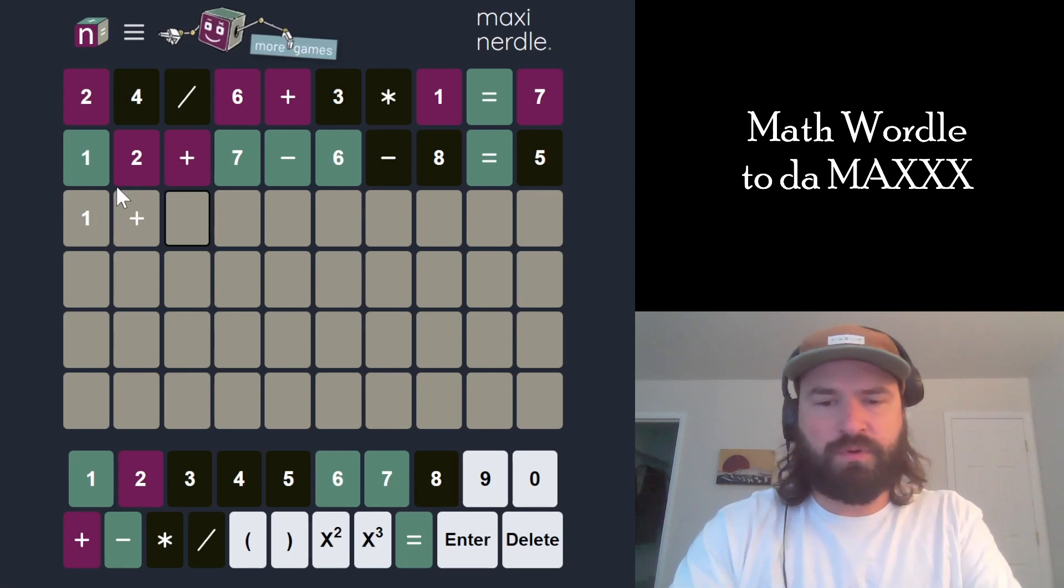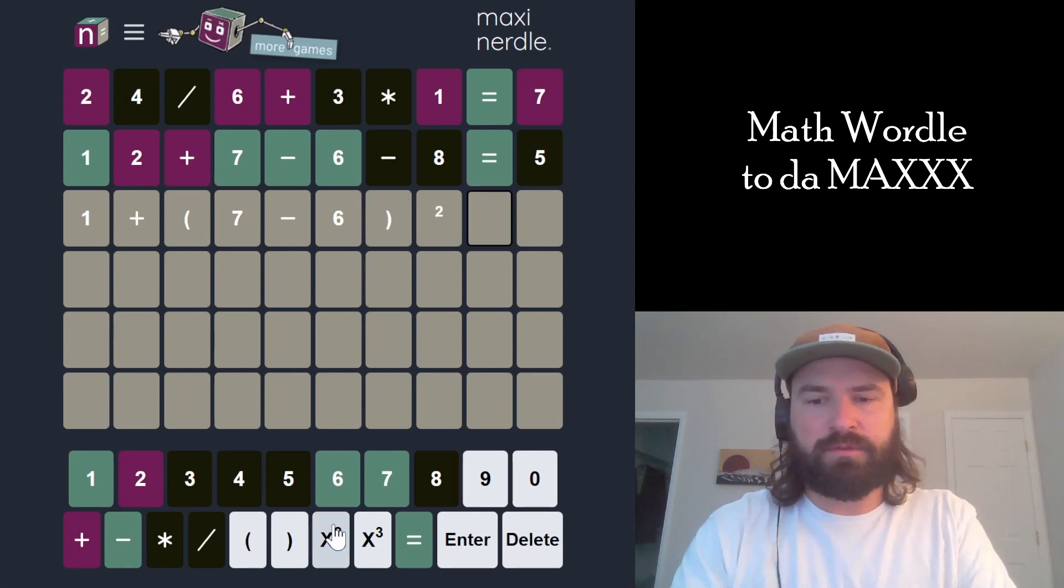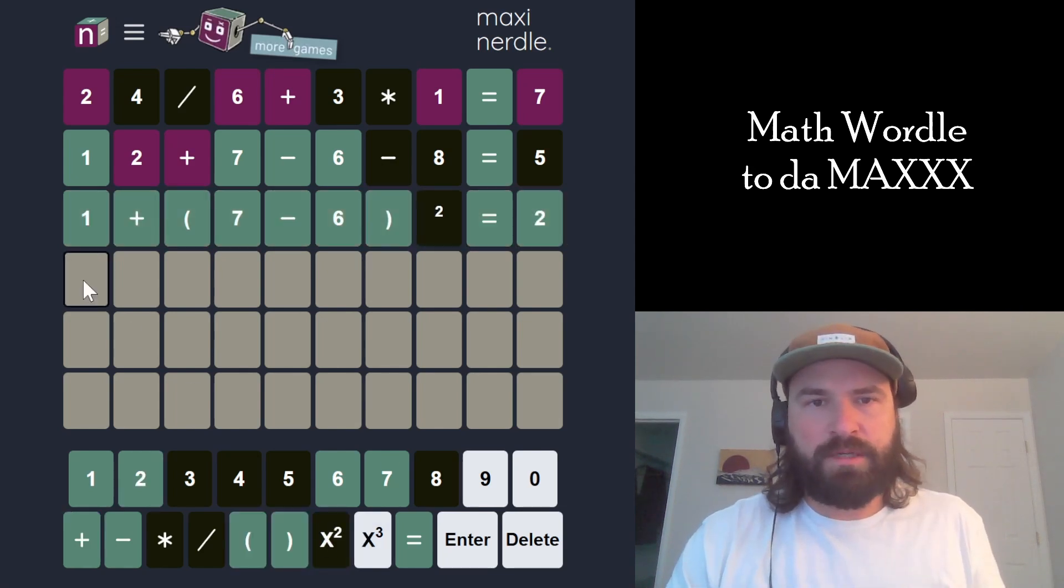1 plus parentheses 7 minus 6. This is supposed to be a parentheses. It could be cubed or squared equals 2. Great.